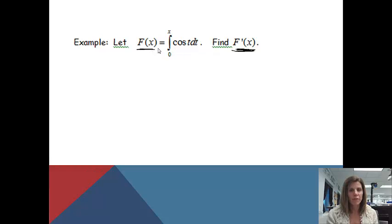So before I can find the derivative, let's actually find the function, and then we'll take the derivative of it. When I'm going to do this, I'm going to use the fundamental theorem of calculus. The antiderivative of cosine t would be sine t plus c.